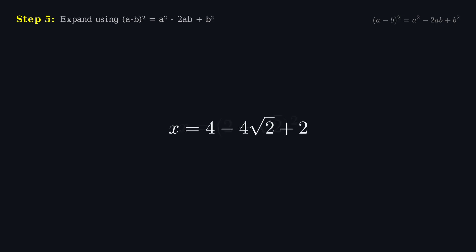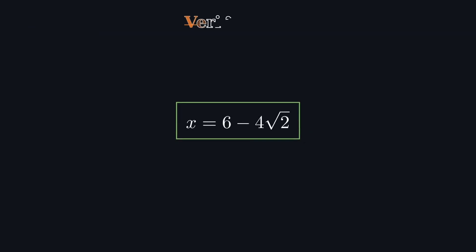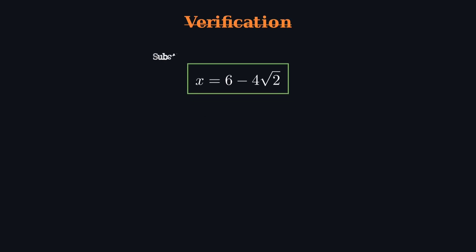2 squared is 4. Then we subtract 2 times 2 times √2, which is 4√2. And finally, √2 squared is just 2. Put all of that together, and we get 6 minus 4√2. That means x equals 6 minus 4 times √2.